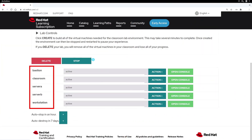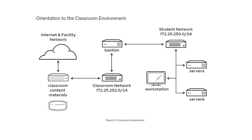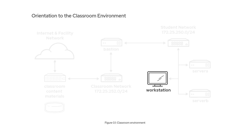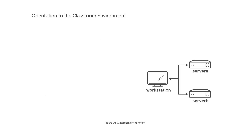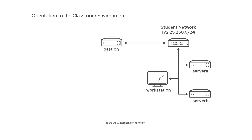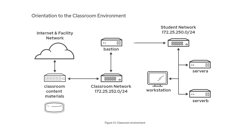Next, let's take a look at our virtual machines. To help us get started, let's look at the Lab Environment Orientation graphic located in the Student Guide. In the example, you can see that our Student Workstation is connected to Server A and Server B, as well as the Student Network. The Student Network is connected to the Bastion Server, which then connects to the Classroom Network, the Internet, the Facility Network, and the classroom content materials needed to run the labs and exercises for the course.